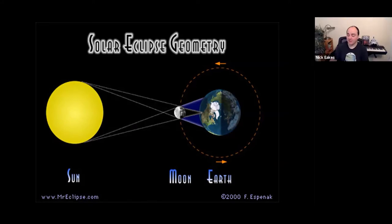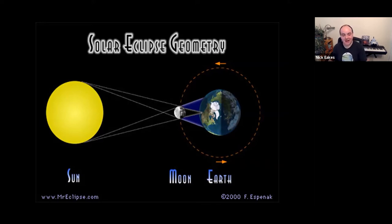We're really lucky to have that alignment. Planets and moons going around other stars probably have eclipses too, but they might not be quite as perfect as the ones we get here on earth. It's nice that even though the sun and moon are really far apart, the geometry works out so we can see a really beautiful eclipse.